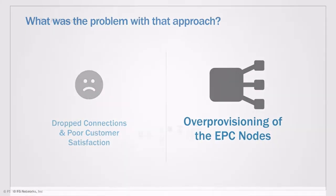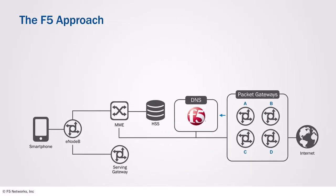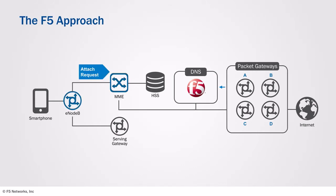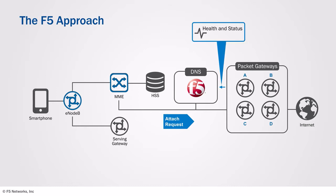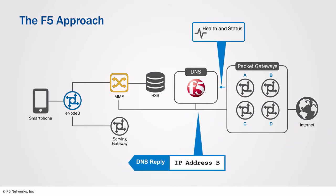Using F5 DNS with BigIP Global Traffic Manager, answers to DNS queries can be intelligent. BigIP GTM will only pass back answers to the MME for gateways and nodes which are available and have capacity.